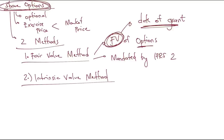Why do we still have the intrinsic value method if the fair value method is required? Sometimes the fair value of share options is not available. That is why if the fair value of the options is not available, we can use the intrinsic value method — but only if the fair value of the share options cannot be estimated reliably.